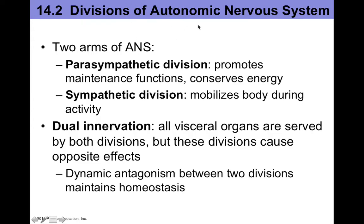There are two divisions of the autonomic nervous system: the parasympathetic and sympathetic divisions. The parasympathetic division promotes maintenance of functions and conserves energy for your body, which is why we associate it with rest and digest functions. The sympathetic division mobilizes the body during activity, and so it is more active during the fight or flight response.